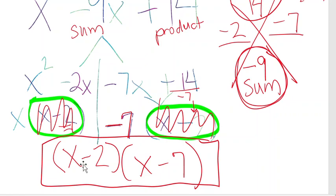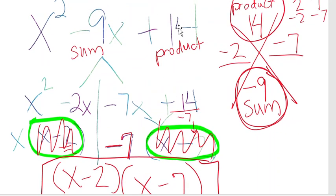And notice you're left with x minus 2 and x minus 7, negative 2 times negative 7. Multiply to get me back to this 14 in my original problem, and they add to get me back to that negative 9x in my original problem.